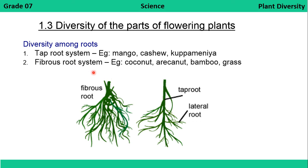Among the roots there are two main types. The first is the tap root system, which is mainly seen in dicot plants. The tap root system has a main root that starts from the ground and grows downward, called the tap root or main root. From the tap root, many small roots grow sideways — these are called lateral roots. In the fibrous root system, many small roots originate from the same point.